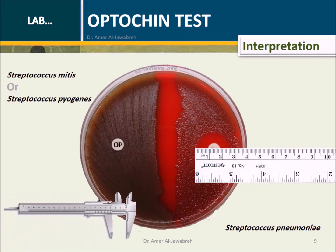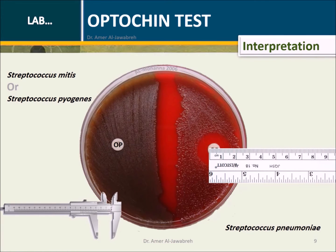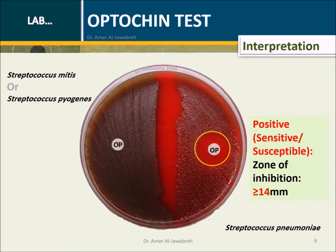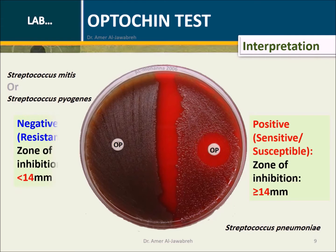Interpretation: Measure the zone of inhibition with a ruler or caliper. A zone of inhibition greater than or equal to 14 mm is considered positive (sensitive), confirming S. pneumoniae. Otherwise, the organism is resistant, indicating S. epidermidis or S. pyogenes.